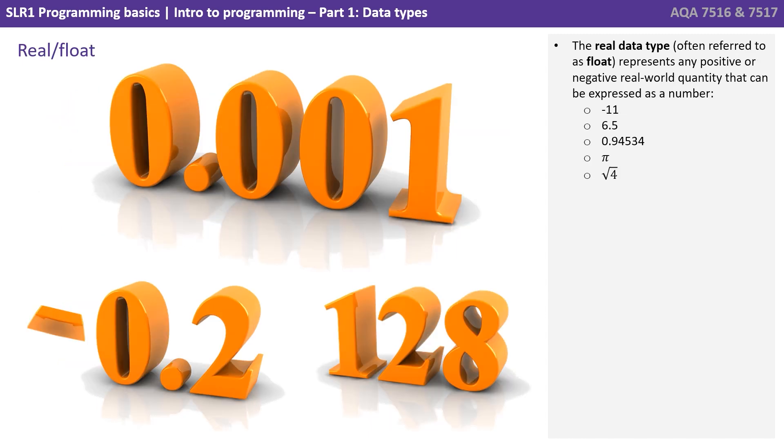Next, we have the real data type, often referred to as a float. This represents any positive or negative real world quantity that can be expressed as a number. So now we can include a decimal component.